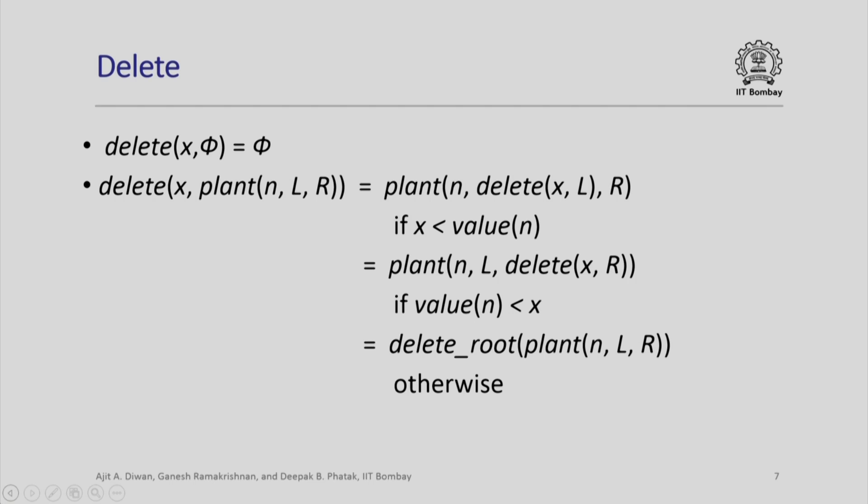The root node remains n; we just delete x from the set represented by the left subtree and keep the right subtree as it is. Similarly, if value(n) is less than x, then we delete from the right subtree. The difficult part is when x equals the value stored in the root node itself — in that case we need a different operation called delete_root.